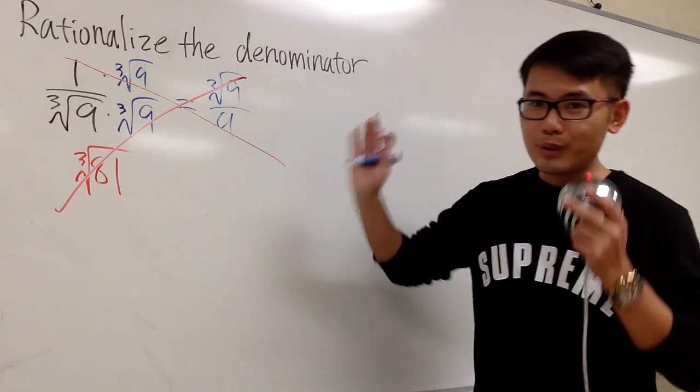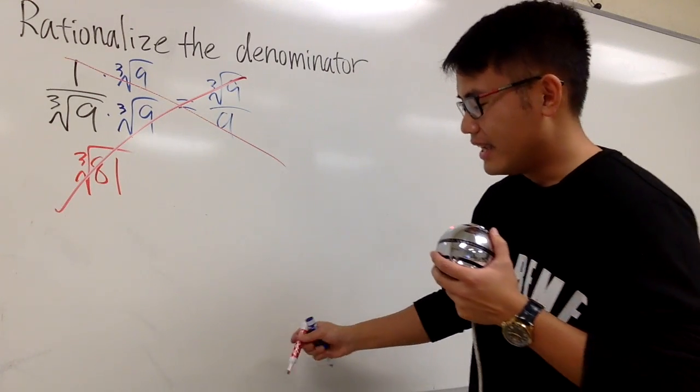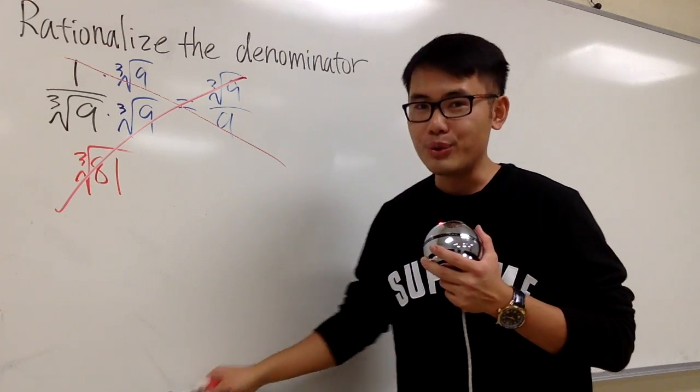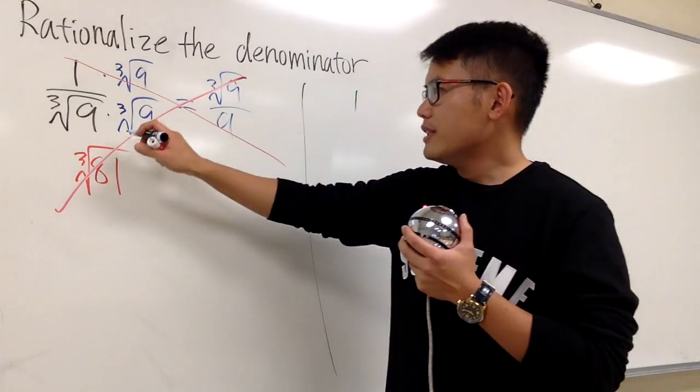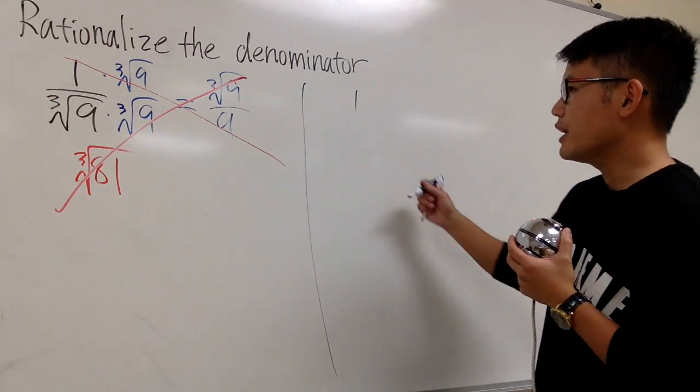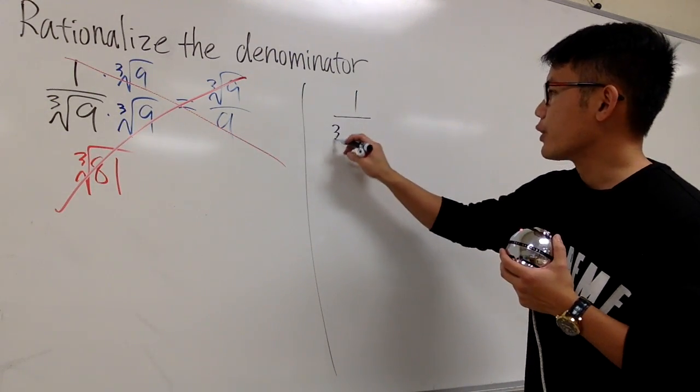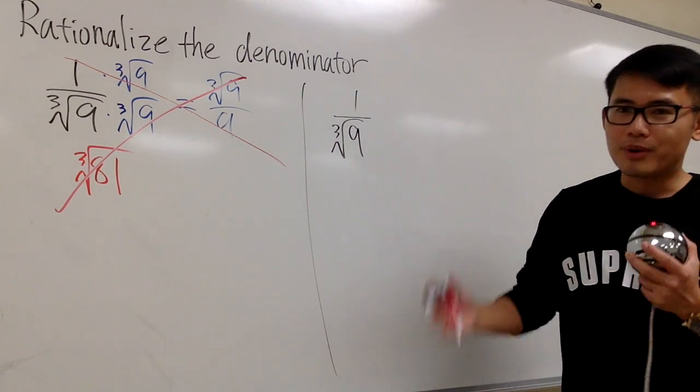You should look at this and then write it down somewhere, and I should remind you, don't ever do this. And here is the right way to do it. So the reason that this was wrong is because we multiplied by the wrong thing. Let's look at this one: 1 over the cube root of 9.